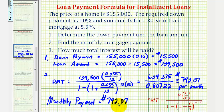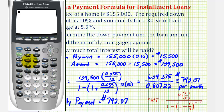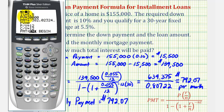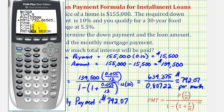Let's verify this using the finance menu of the graphing calculator. Press Apps, then Enter for Finance, then Enter for TVM Solver. N is the number of payments — 30 times 12, or 360. The interest rate is 5.5 percent. PV (present value) is the loan amount of $139,500. The future value would be zero after the loan is paid. Payments per year is 12, compounds per year is 12, and payments are made at the end of the month. Go to PMT, clear it, then press Alpha, Enter to solve. This confirms the monthly payment is $792.07.